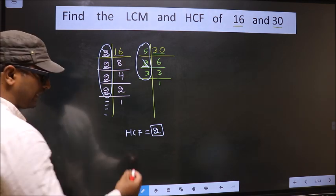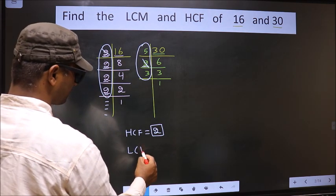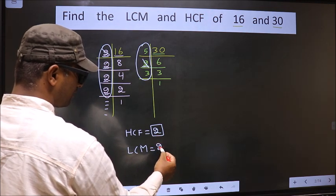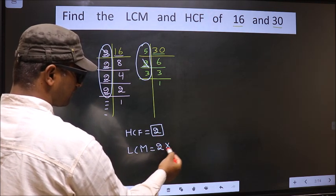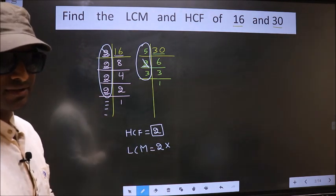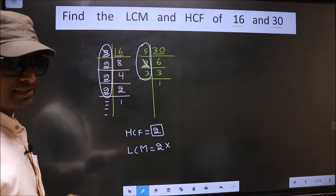Okay. Now, LCM is whatever HCF you got to that number, you multiply by the numbers which we did not cut. What I mean is,